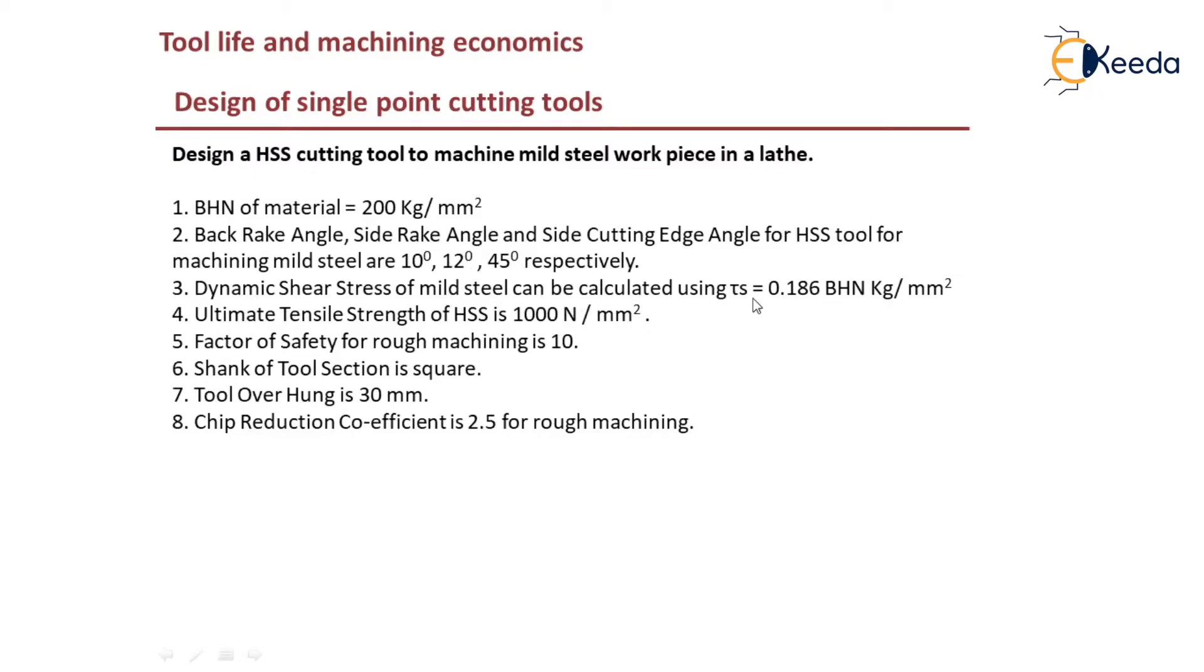Dynamic shear stress of mild steel can be calculated using tau s equals 0.186 BHN kg per mm square. Ultimate tensile strength of HSS is 1000 N/mm square and the factor of safety for rough machining is 10.